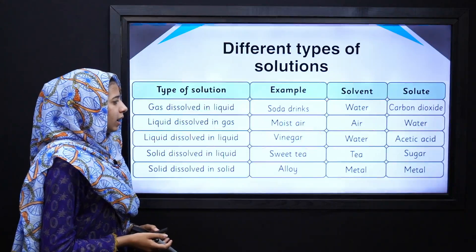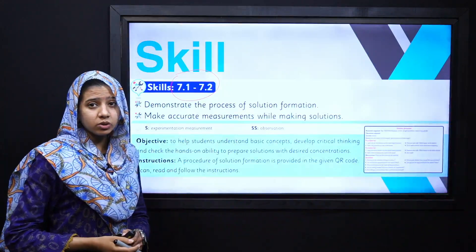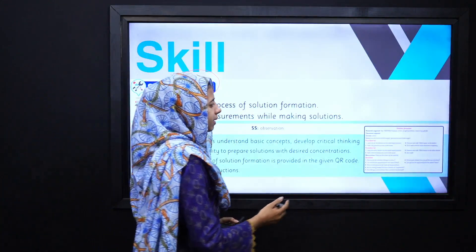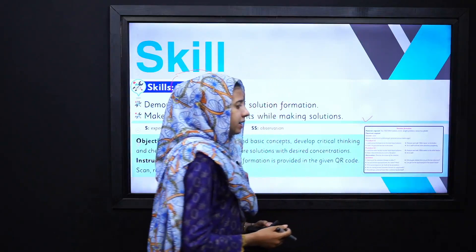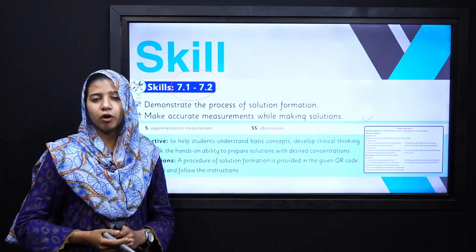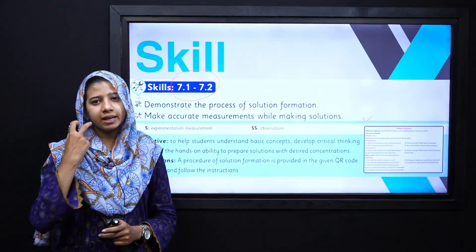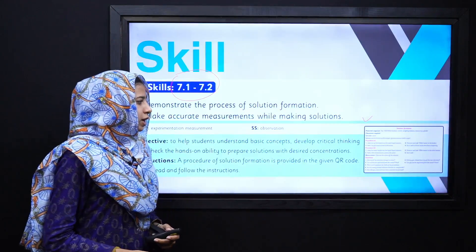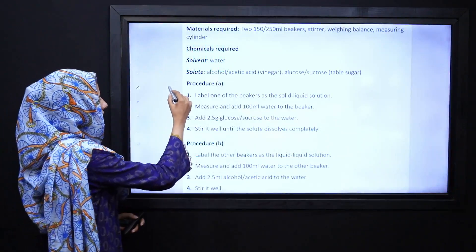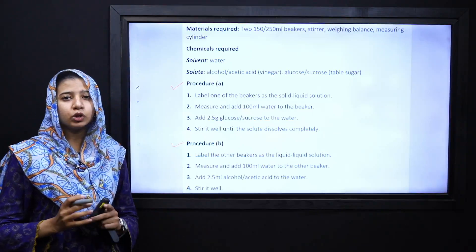Next, we move to achieve our skill — that is Skill 7.1 and Skill 7.2. You can easily get access to this skill by scanning the QR code, and a skill link is also provided in the description of this video. We have two procedures to perform, in which we prepare our solutions.